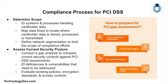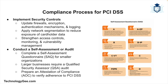Achieving and maintaining PCI DSS compliance involves several steps. First, you need to determine the scope by identifying which systems and processes handle cardholder data, mapping data flows, and identifying all locations where cardholder data is stored, processed, or transmitted. Next, conduct a gap analysis to assess your current security posture against PCI DSS requirements and identify any gaps or deficiencies. Then implement the necessary security controls to address those identified gaps.